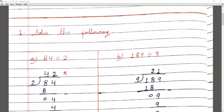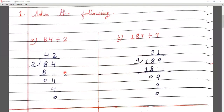Question number A is 84 divided by 2. First of all, we will look at number 84. We will start with table 2. The first digit is 8. We will see 8 is bigger than 2, so we will not need to make a pair.